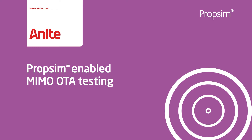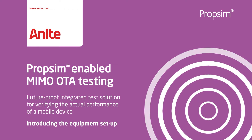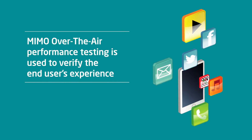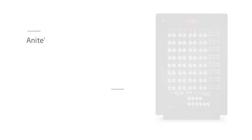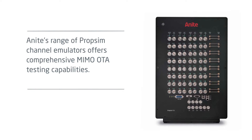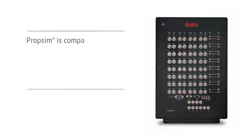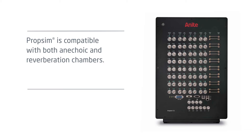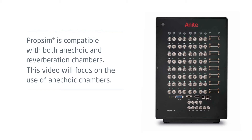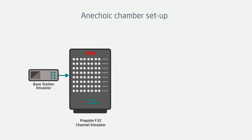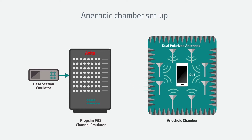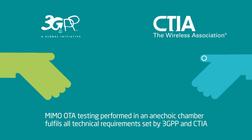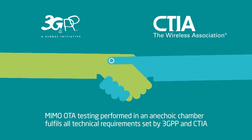PropSim-enabled MIMO OTA testing is a future-proof integrated test solution for verifying the actual performance of a mobile device. MIMO over-the-air performance testing is used to verify the end-user's experience when accessing data services on a mobile device. Anite's range of PropSim channel emulators offers comprehensive MIMO OTA testing capabilities, compatible with both anechoic and reverberation chambers. This video will focus on the use of anechoic chambers, where PropSim creates realistic RF conditions for the MIMO device. MIMO OTA testing performed in an anechoic chamber fulfills all technical requirements set by 3GPP and CTIA.